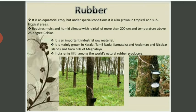Next is non-food crops. Food crops are those crops that are used for food, and non-food crops are the rest. The first non-food crop is rubber. Rubber is an important industrial raw material and India ranked fourth among the world's natural rubber producers in 2018–2019.